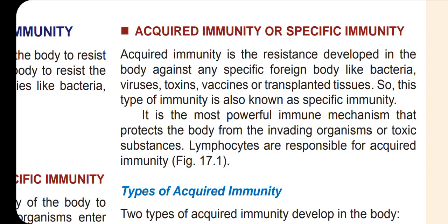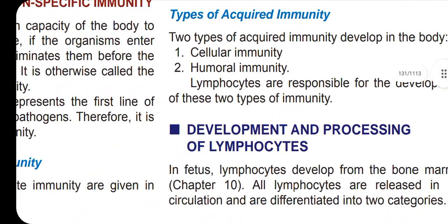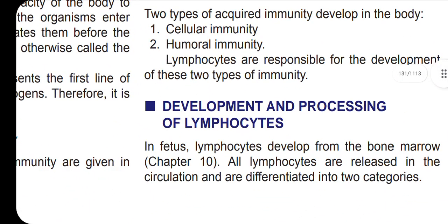Next, there are acquired immunity types. There is cellular or cell-mediated immunity, and then humoral immunity — humoral means related to body fluids. This is the basic structure of immunity.